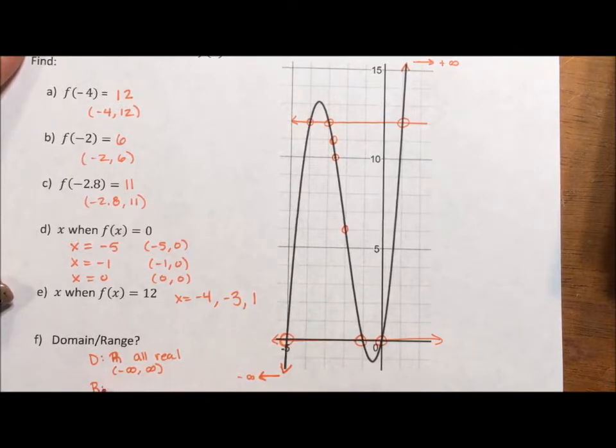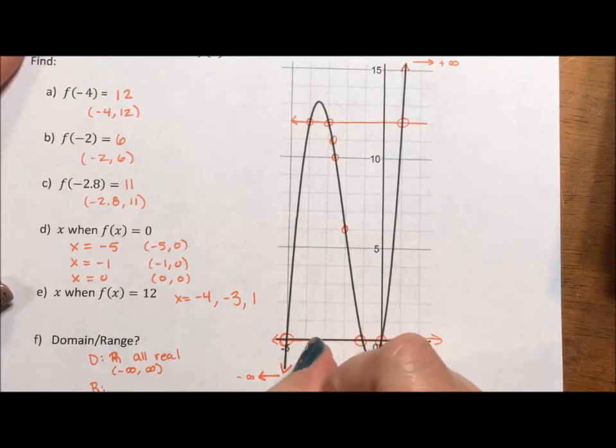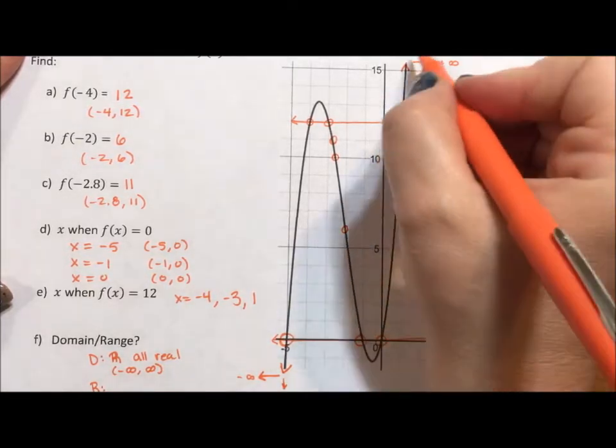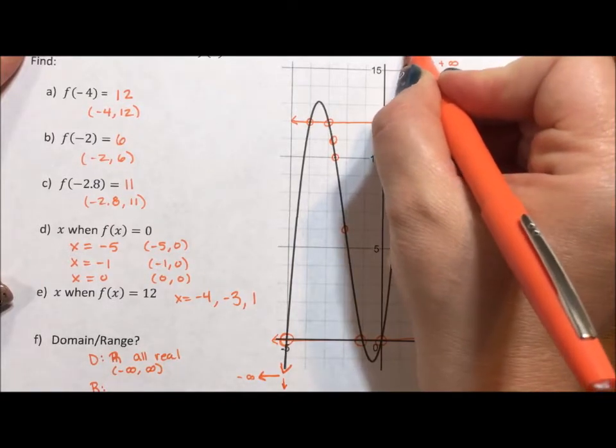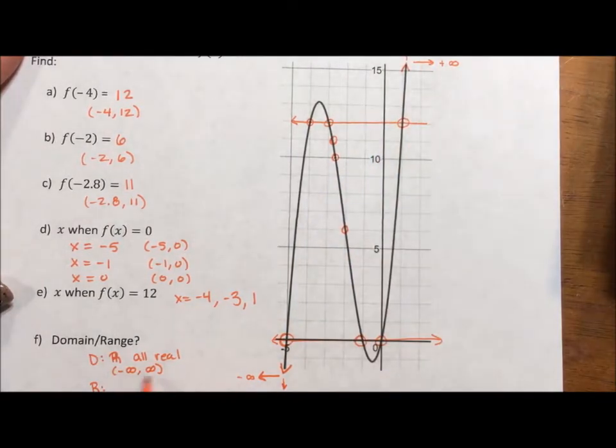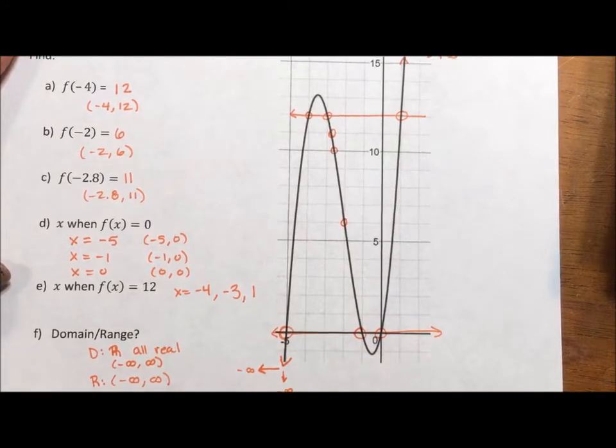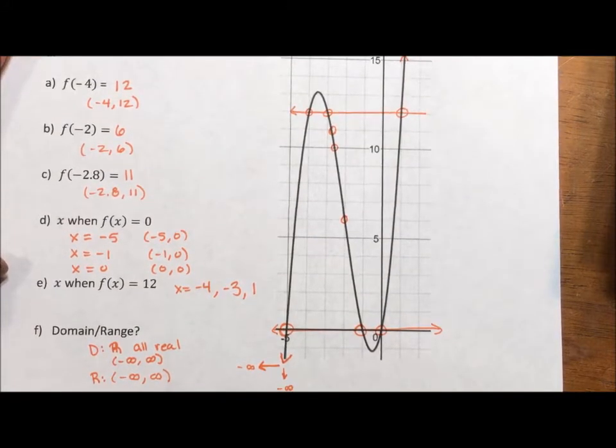The range. In this case, this arrow implies that it goes forever down to negative infinity. This arrow implies it goes forever up to positive infinity. So again, our range can be any of those three answers implying all real values of y.